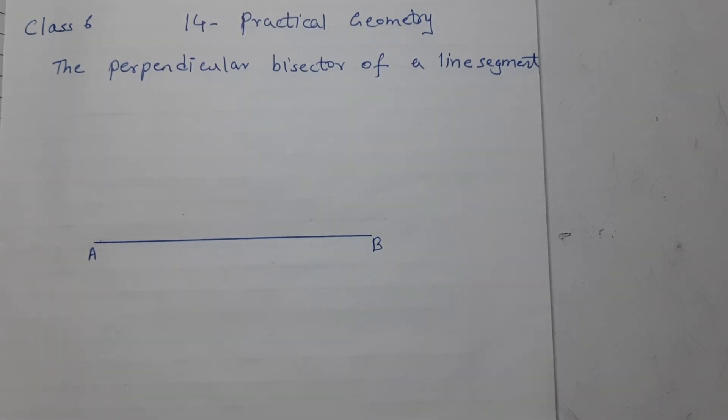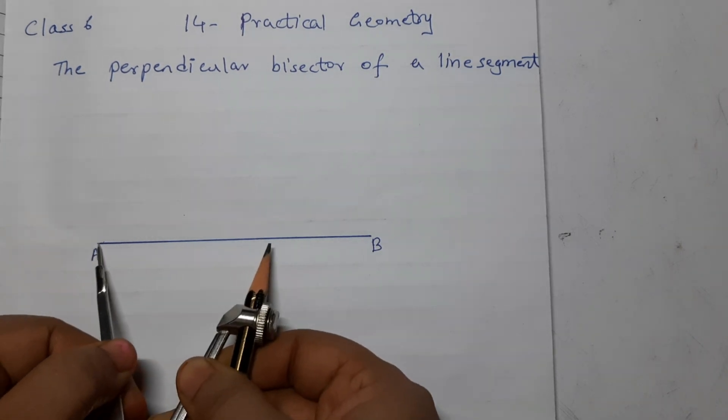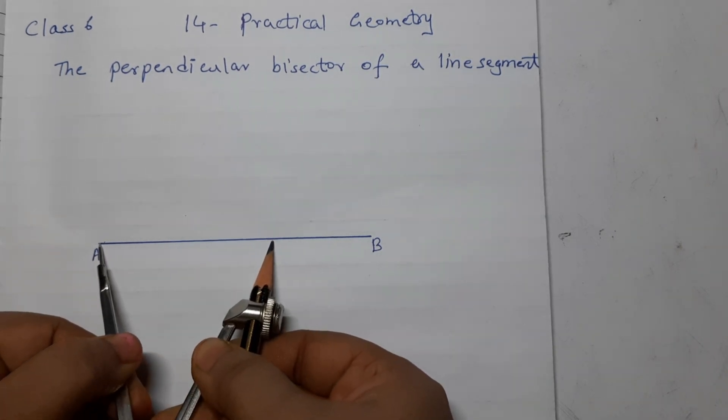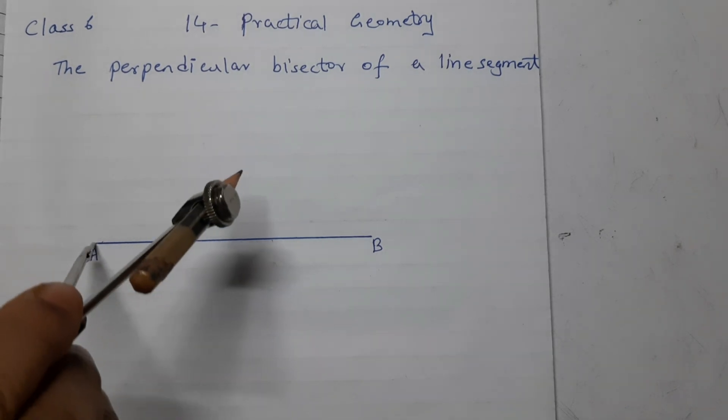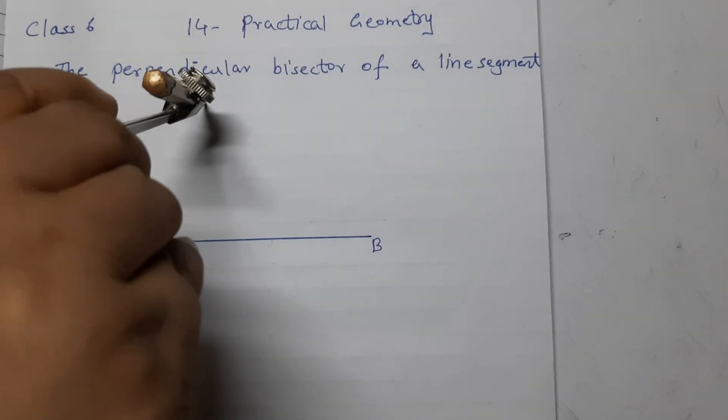The second step is to take a radius more than half the length of AB. With A as center, draw an arc above and below the line.